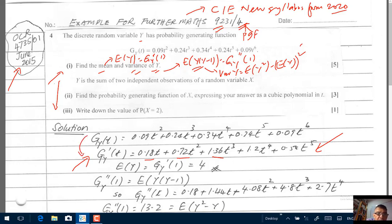Plug in t equals to 1, plug in t equals to 1, use a calculator, you will get the expected value of Y equals to 4. So, and we are done with that part. The mean of Y is 4.